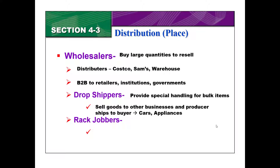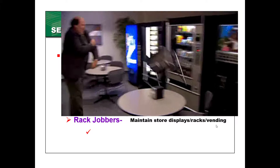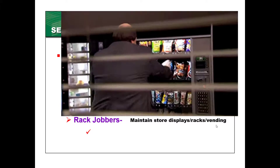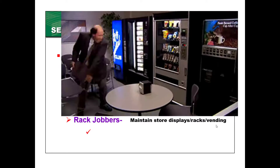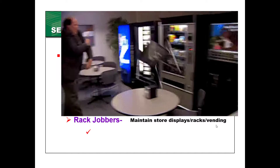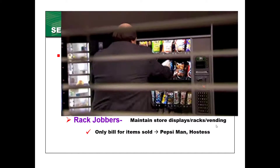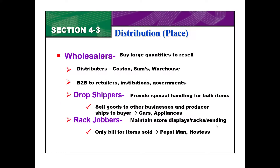The third type of intermediary is what's called a rack jobber. These are the people who maintain the store displays, the racks, or like the vending machine. For example, this could be the Pepsi Man. Hostess was huge at this — they'd have a Hostess person who'd go in and stock the rack for Twinkies at the gas station. So those are rack jobbers.